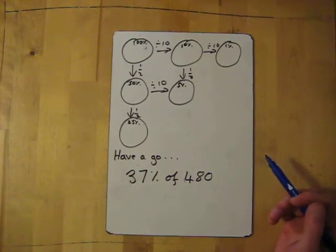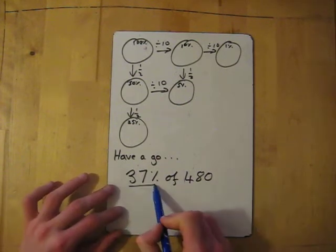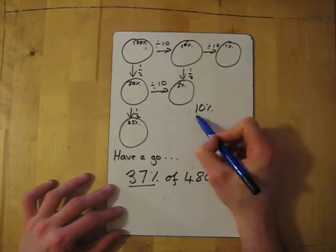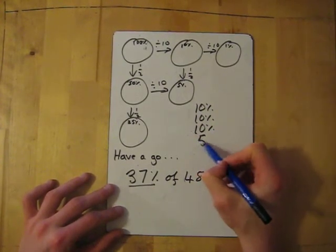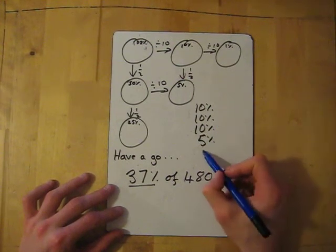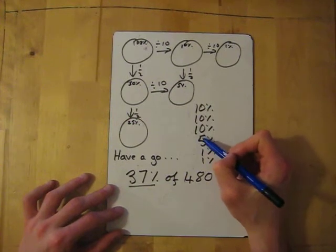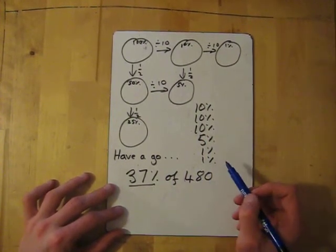37% of 480. I'm going to go through the answer—you want to pause in 3, 2, 1. Right, the answer: I'm going to do it so I need 10%, 10%—I need three 10%s to get to 30, I need a 5%, and I need two 1%s. If I add all those together that would give me 37%.